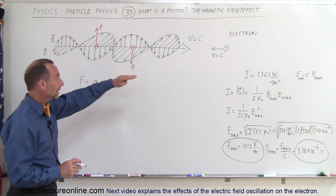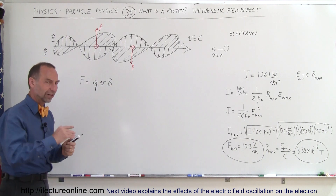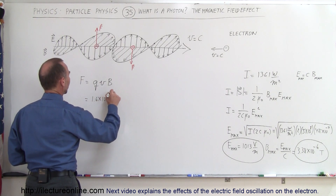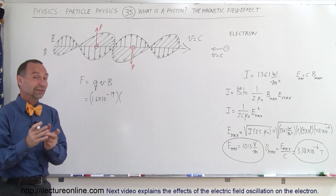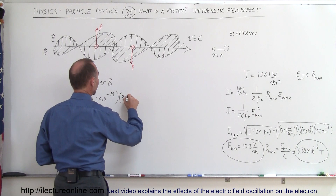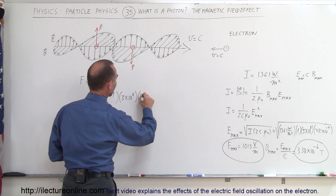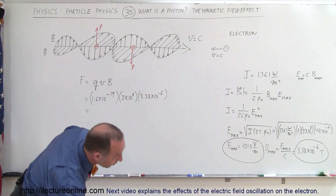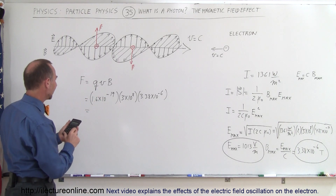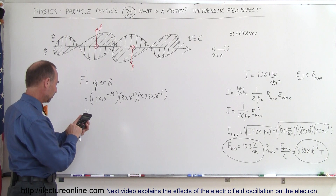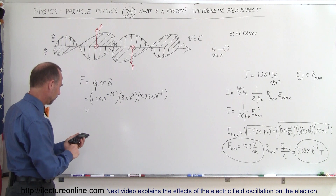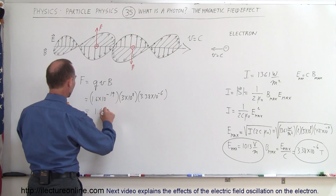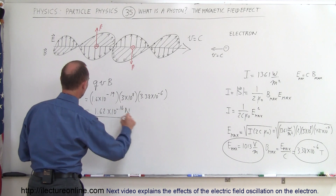The force on an electron as sunlight passes by — causing the electron to feel an oscillating force up and down — equals the charge of the electron (1.6×10⁻¹⁹ C) times the effective velocity of the electron relative to the sunlight (the speed of light, 3×10⁸ m/s) times the strength of the B field (3.38×10⁻⁶ T). The force equals 1.62×10⁻¹⁶ newtons.